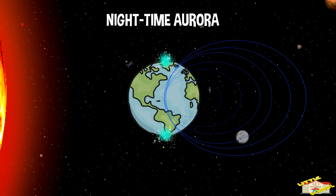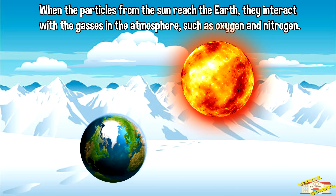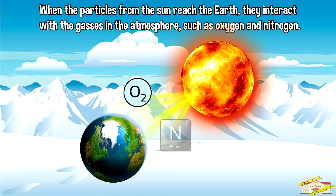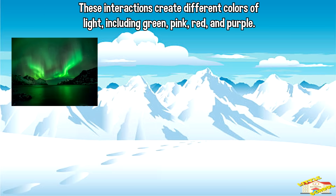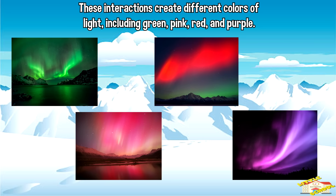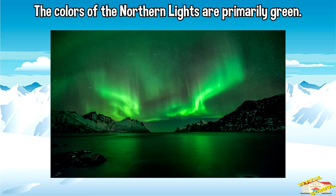This is the nighttime aurora. When the particles from the Sun reach the Earth, they interact with gases in the atmosphere such as oxygen and nitrogen. These interactions create different colors of light, including green, pink, red, and blue. The colors of the northern lights are primarily green.